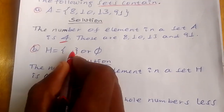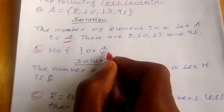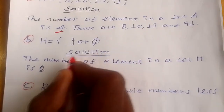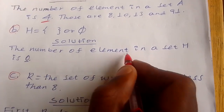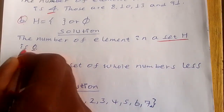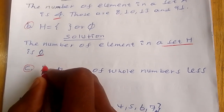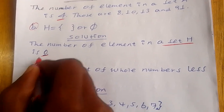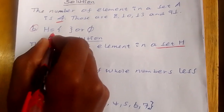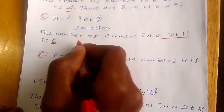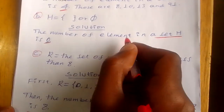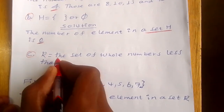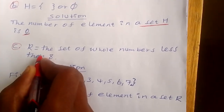Set H is equal to the empty set. Set H is an empty set. Solution: the number of elements in set H is zero, because H does not have any element — it has no elements at all.